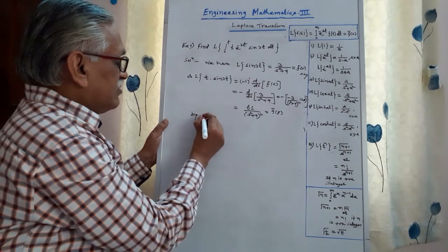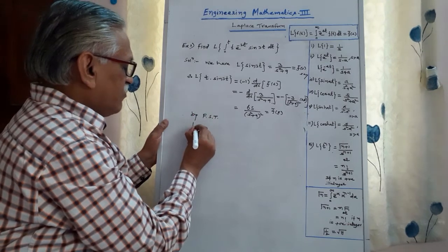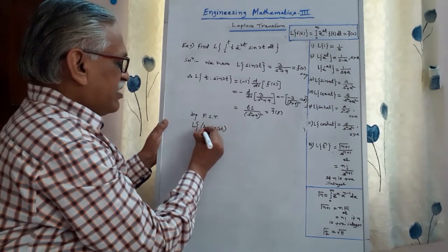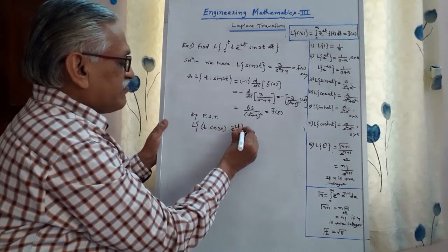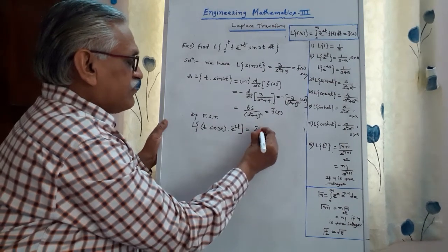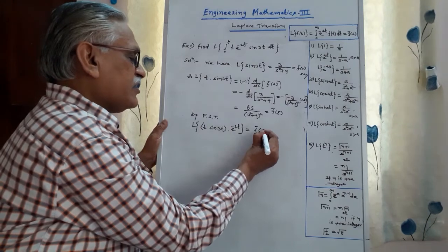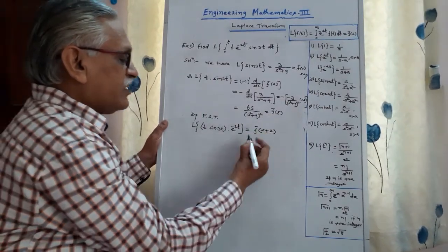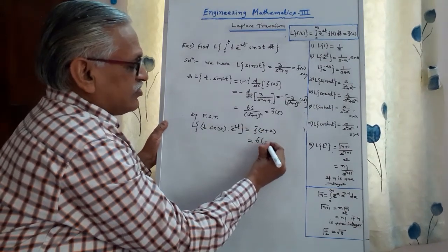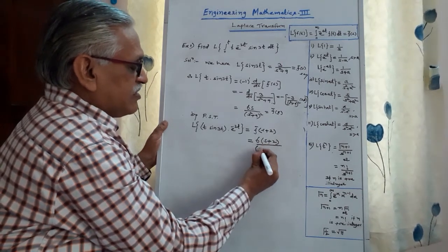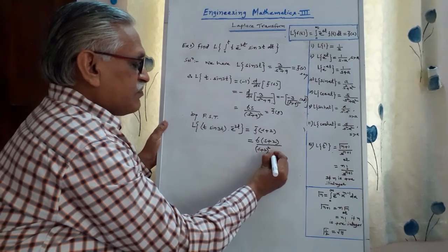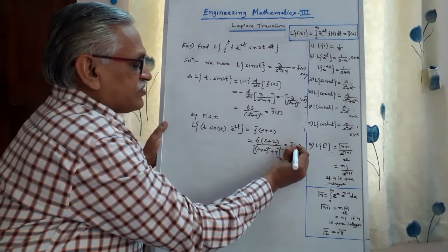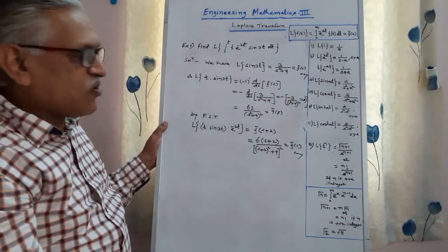By the first shifting theorem, the Laplace transform of t·sin(3t)·e^(−2t) is f̄(s) with s replaced by s + a, where a = 2. Therefore, replacing s by s + 2 in the expression 6s/(s² + 9)², we get 6(s + 2) / ((s + 2)² + 9)². We call this the new f̄(s).